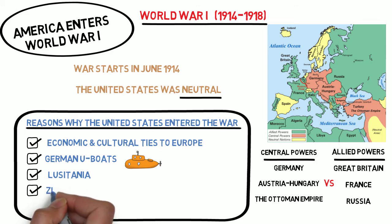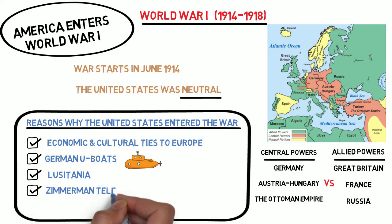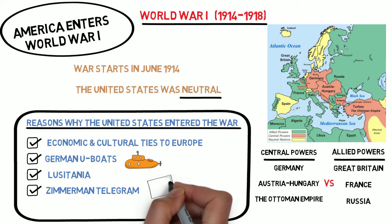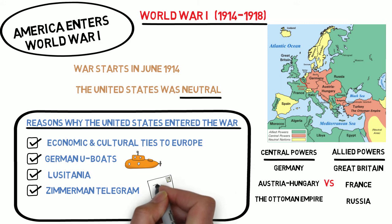Tensions between the U.S. and Germany reached a boiling point, however, when in January 1917, British intelligence officials intercepted a telegram sent by a German official named Arthur Zimmerman to the German ambassador in Mexico. In the Zimmerman telegram, as it was called, the German government proposed a military alliance with Mexico. Germany hoped that Mexico would keep the United States occupied by launching an attack to reclaim the territory that Mexico lost to the United States after the Mexican-American War.